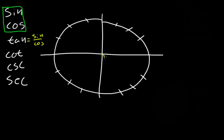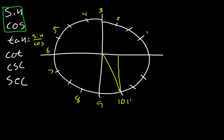Let's try this triangle here. This coordinate goes by π/6. Counting around: 1π/6, 2π/6, 3π/6, 4π/6, 5π/6, 6π/6, 7π/6, 8π/6, 9π/6, and this is going to be 10π/6. We want to reduce this — both numbers are divisible by 2 — so it's 5π/3. So we're now looking for the tangent of 5π/3.